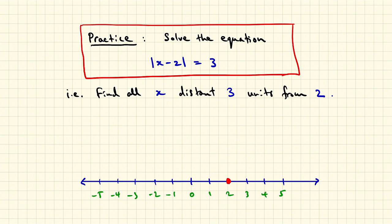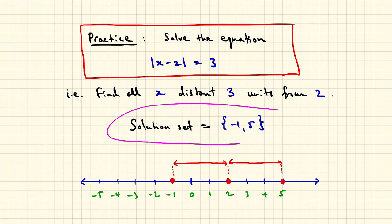In fact, there's two possibilities, whether you move to the right or the left. If you move to the right, you find the number five. And if you move to the left, you find the number minus one. And so the solution set just consists of the two numbers, minus one and five.